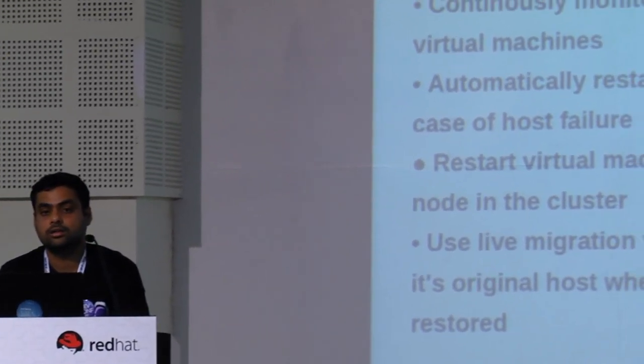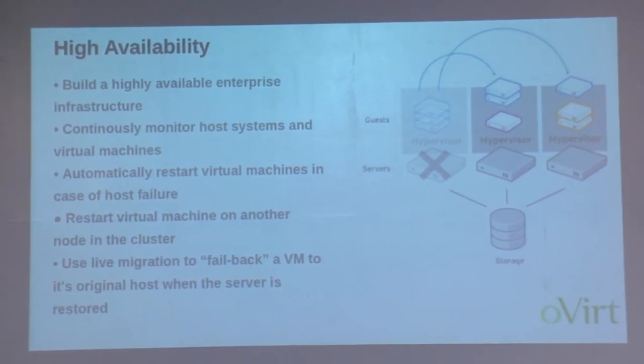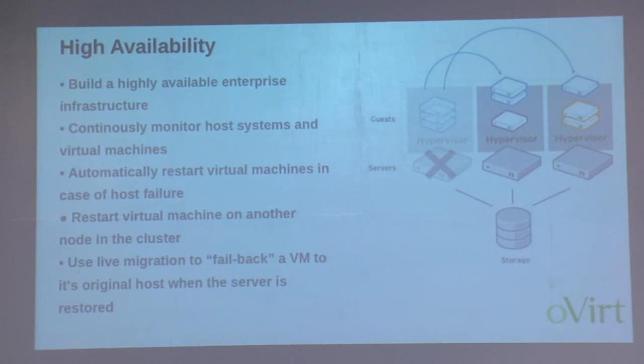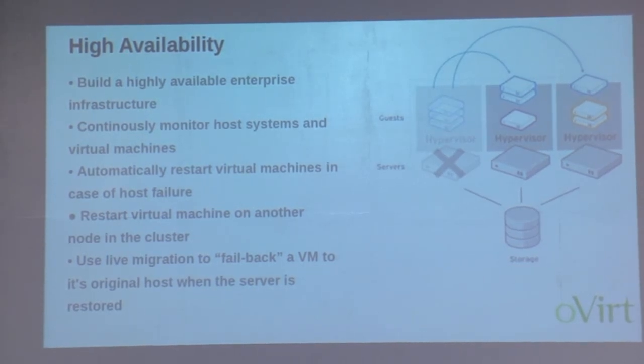For high availability: if the first host goes down, oVirt keeps monitoring and detects that the node is not responding. It then identifies which VMs were running on that host. Because we have shared storage where all VM images are shared across nodes, oVirt will start those VMs on another host that is up and running. Once the failed node comes back up, oVirt will migrate those VMs back to it.